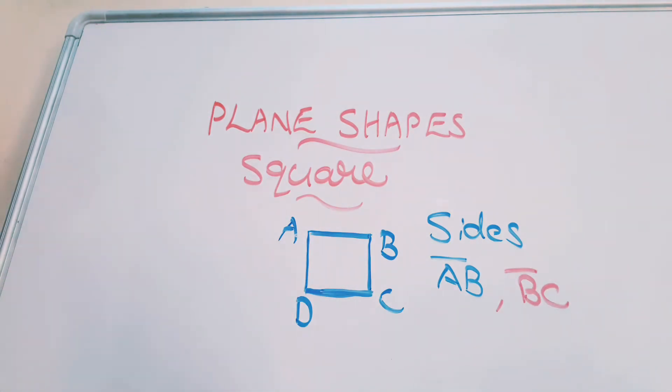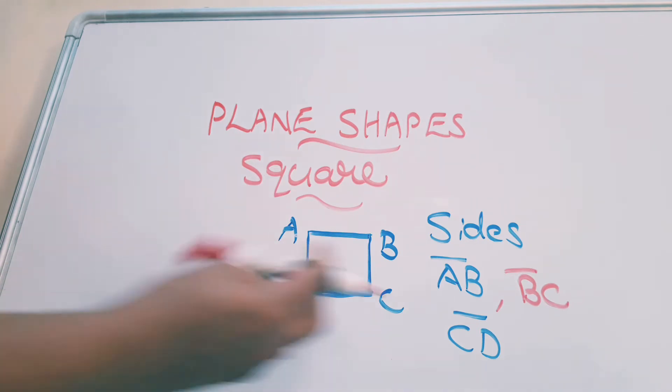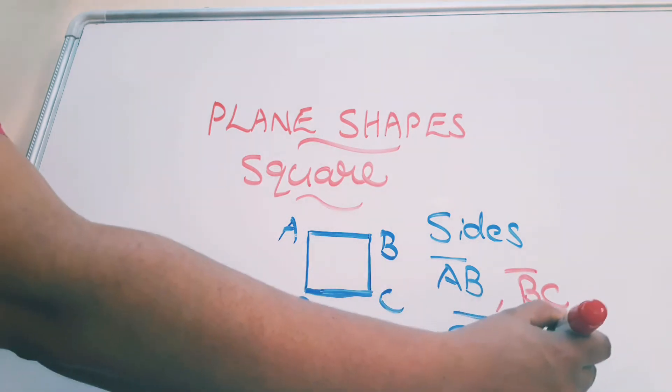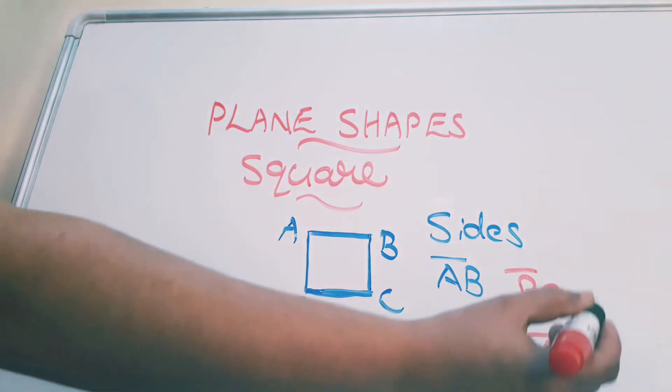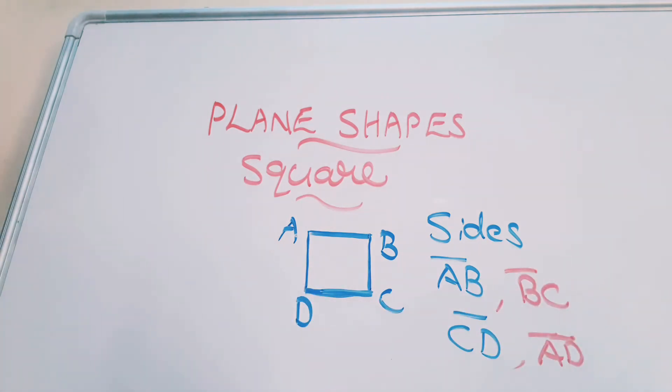Third one CD. Line segment we have to use to represent CD. And last one is AD. So these all are sides.